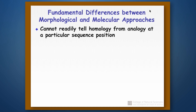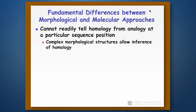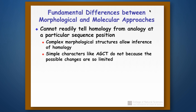Why do we have to do this? How are you going to tell a homology from an analogy when working with a DNA sequence? Complex morphological structures allow inference of homology, but if you're looking at a DNA sequence and two sequences have an A at a particular position, there's nothing to go on to figure out whether those A's are actually homologous or analogous. We can't use any of the criteria set out for morphological features. So since we can't determine homologies or analogies, we just abandon that effort and go straight to parsimony.